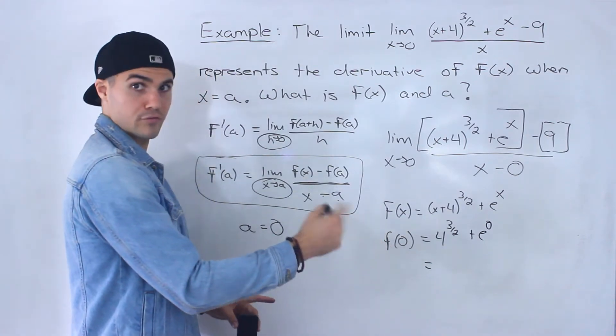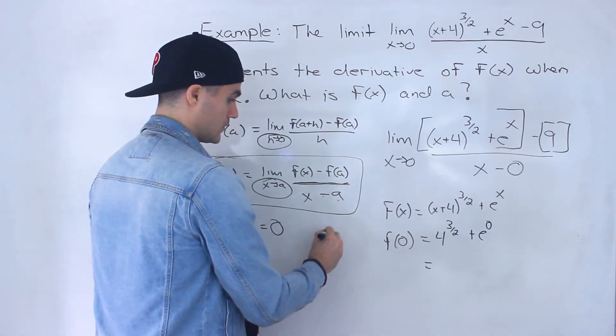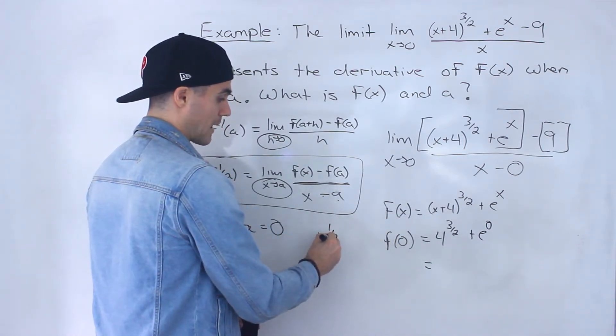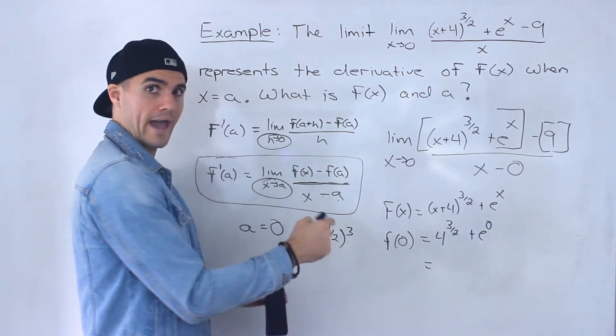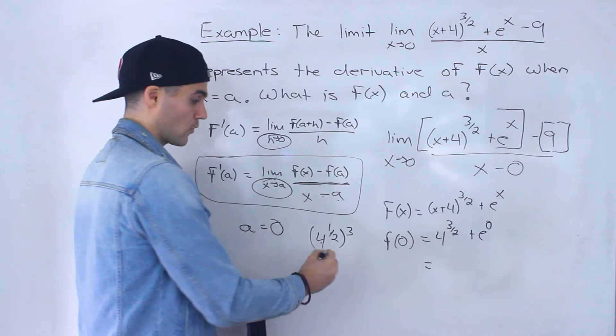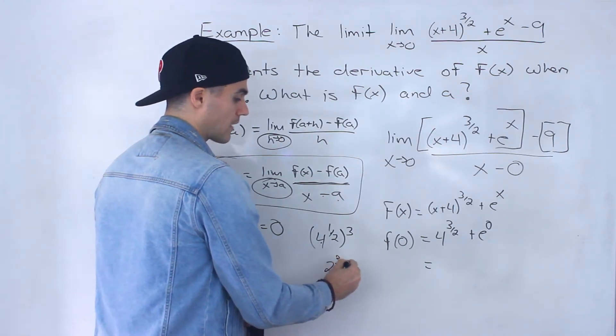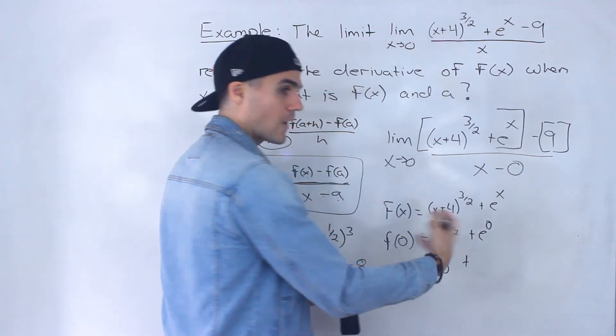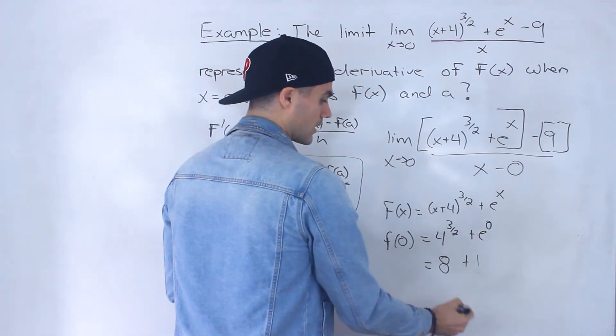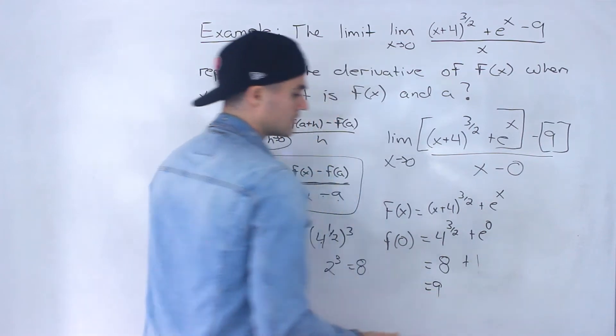Now what's 4 to the power of 3/2? Well we can split that up as (4^(1/2))^3. Split up the exponent. 4 to the power of 1/2 is the same thing as square root of 4 which is 2. 2 to the power of 3 is 8, so this is going to be 8. And then e to the power of 0, anything to the power of 0 is just 1. And so we end up getting 9.